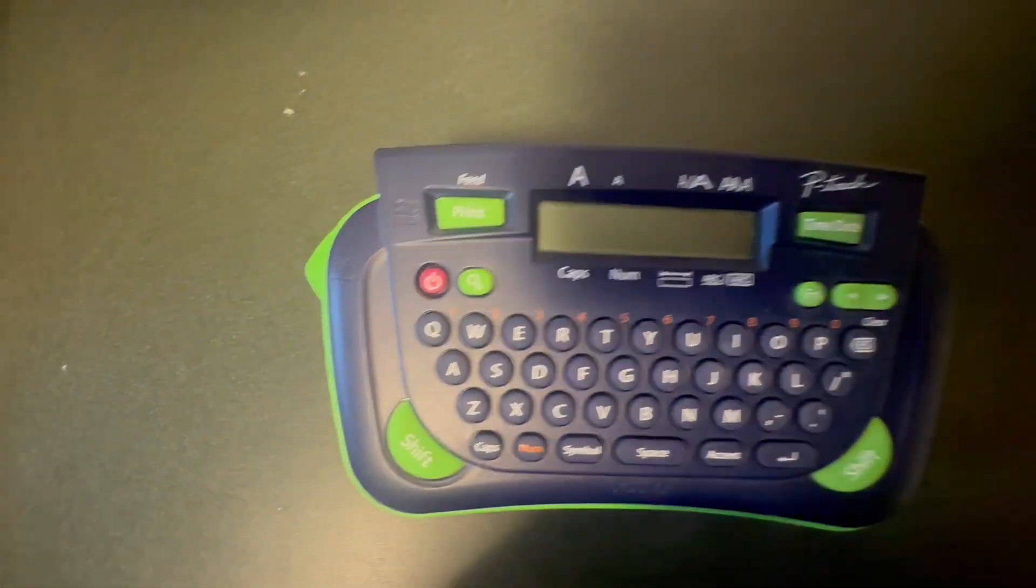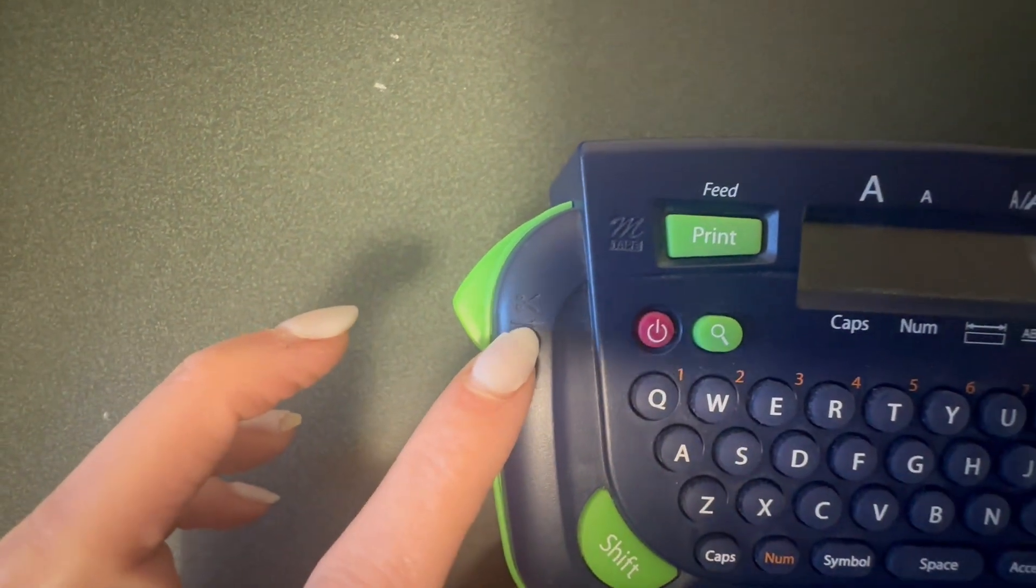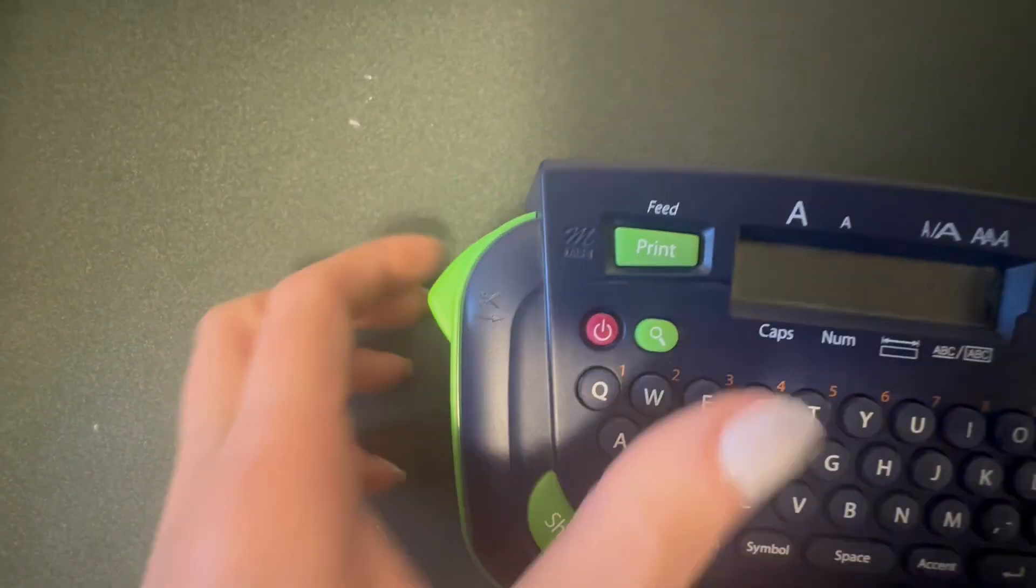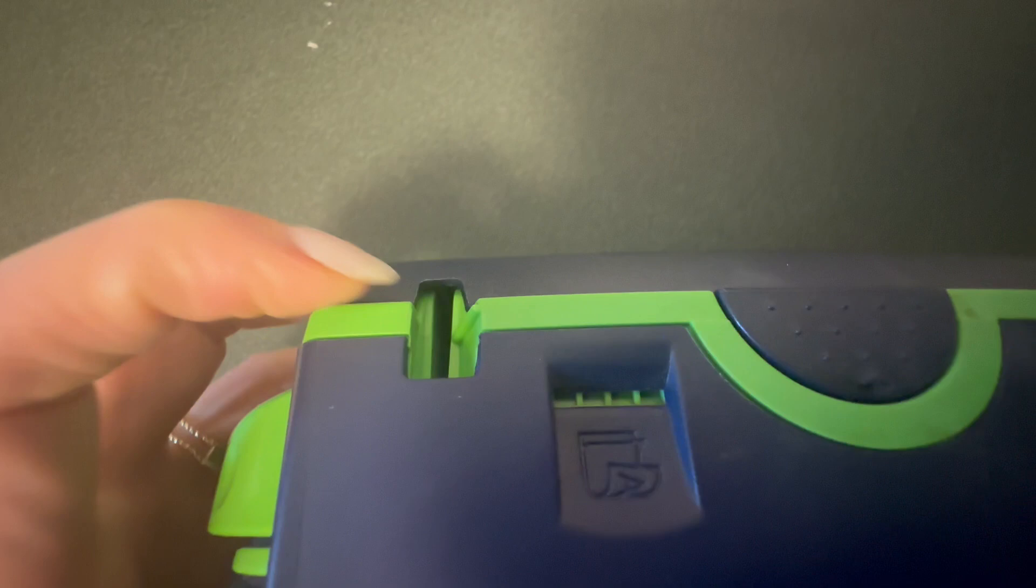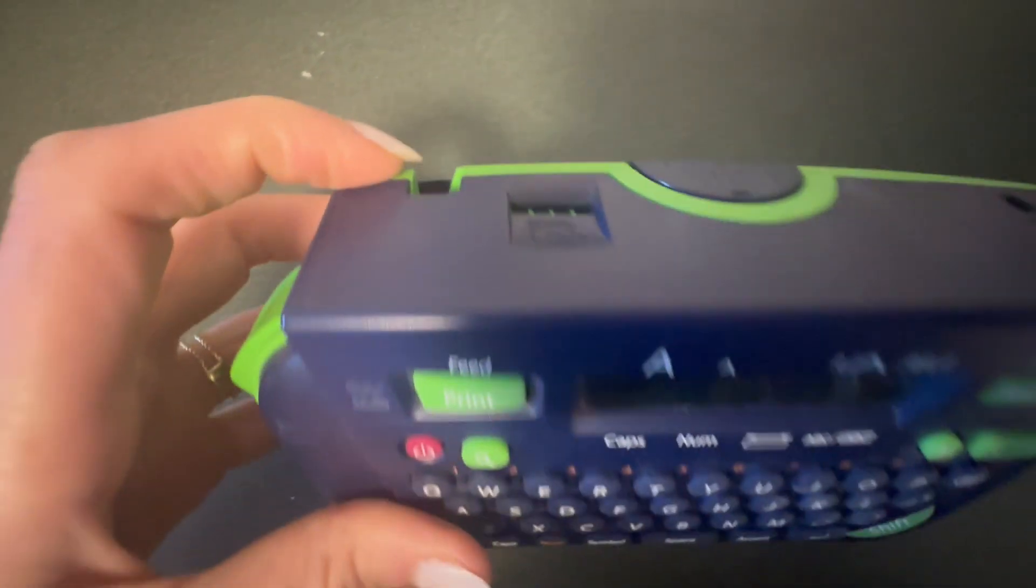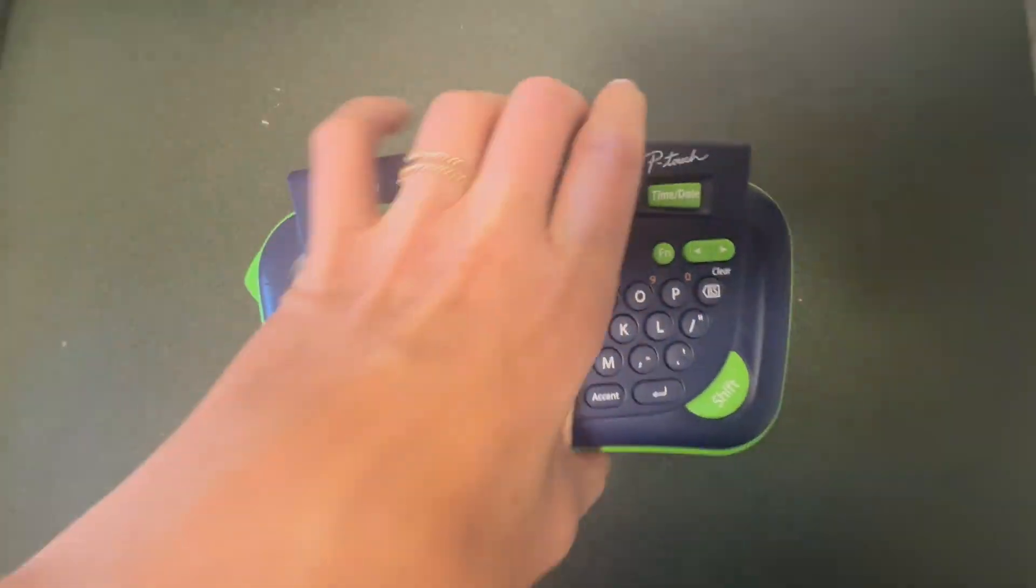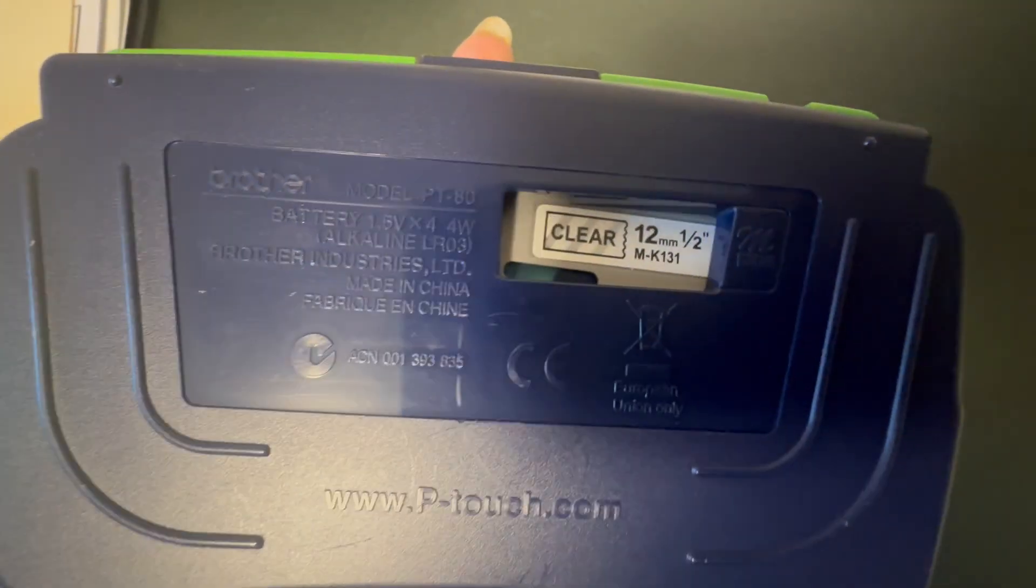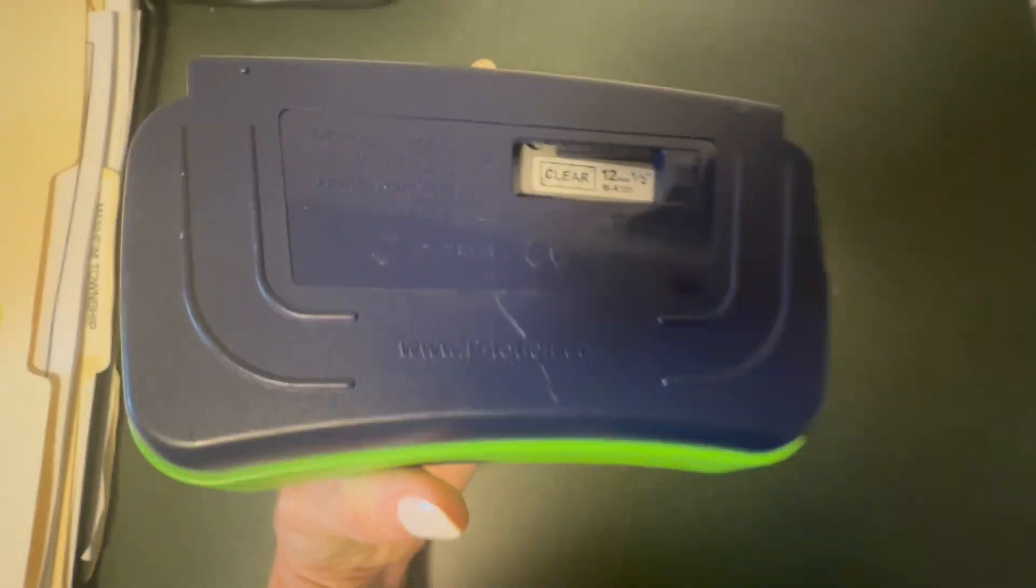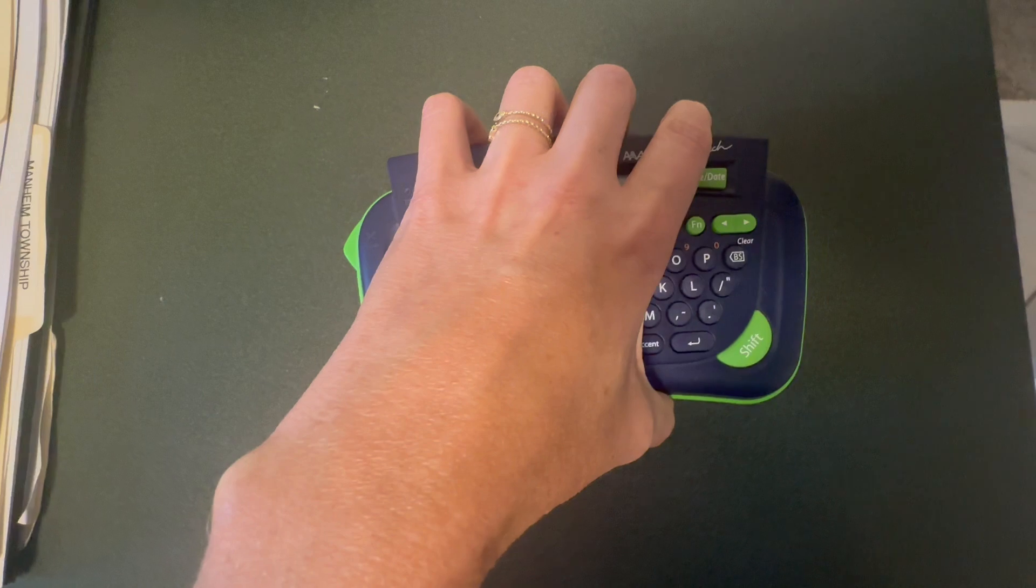You have your little snip tool where you cut off the label that comes out of here. You input the tape back there. I get the Brother tape as well just to keep in line with the label maker.